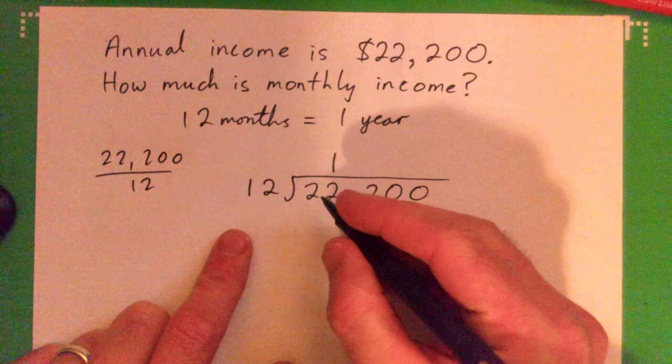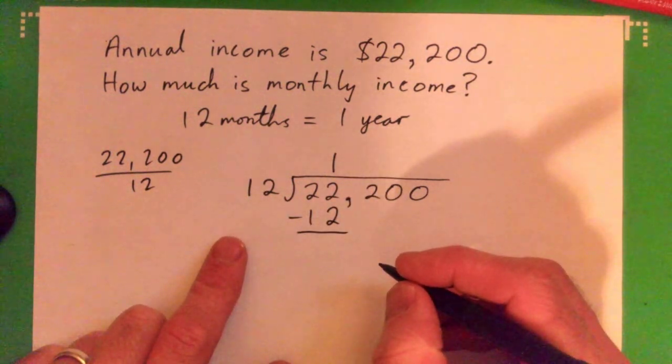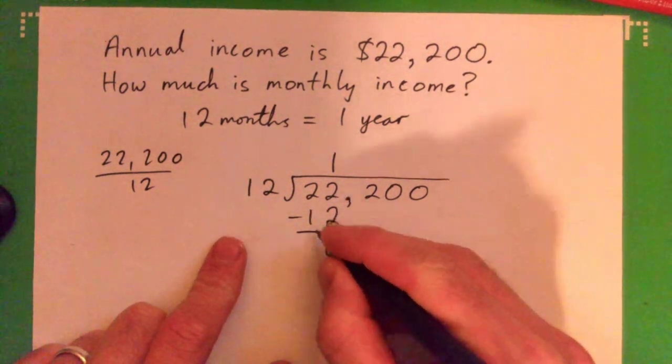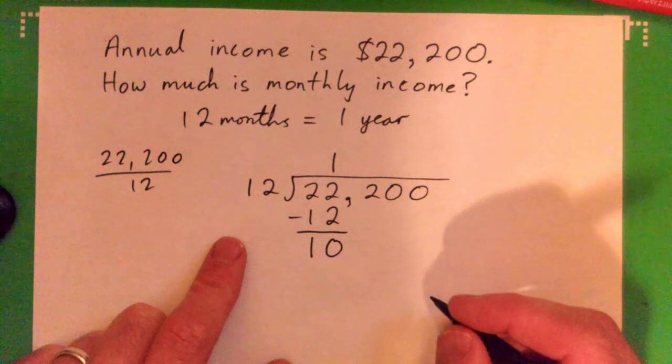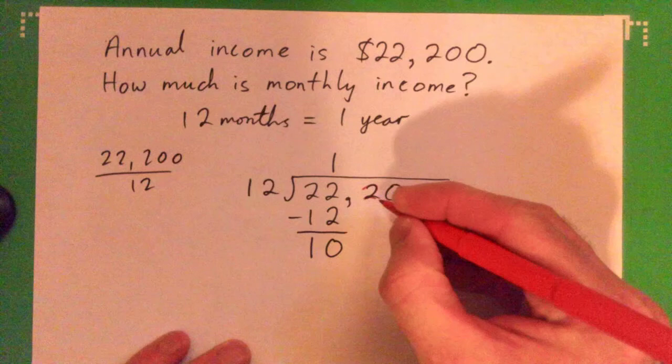So 1 times 12 gives 12, and then subtract them. We get what? We get 10. 2 minus 2 is 0, 2 minus 1 is 10, maybe that's the mistake. Yeah, you get 10 there, and then bring a 2 down so that should be 102.